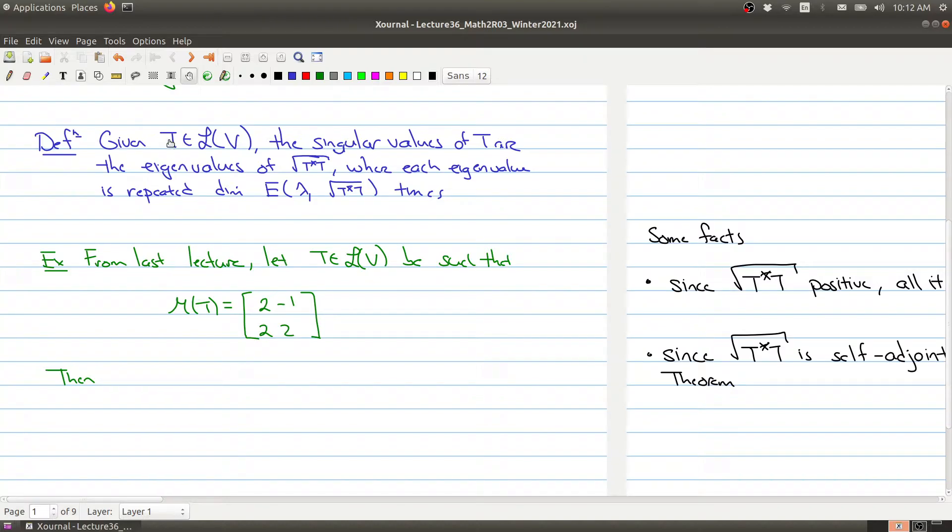Given any operator T, the singular values of that operator are the eigenvalues of this operator. Remember this is the operator you get T composed with its adjoint and taking its square root, so it has a unique square root because the operator inside is a positive operator.